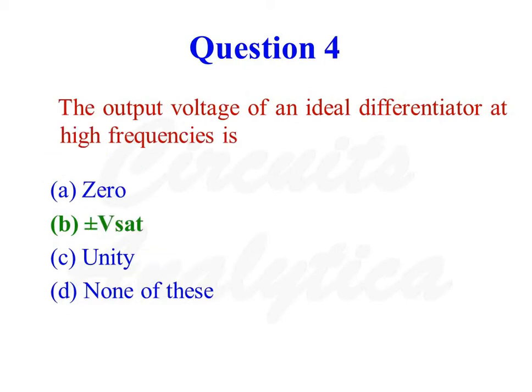The output voltage of an ideal differentiator at high frequencies is plus or minus Vsat. So the correct answer is the second option. For an ideal differentiator, gain is expressed as minus Rf divided by Xc1, where Rf is the resistance connected between the output and the inverting input of the operational amplifier, and Xc1 is the reactance of the capacitor connected between the inverting input and the input signal.